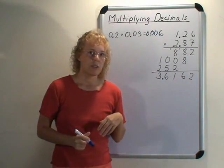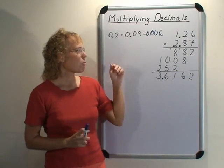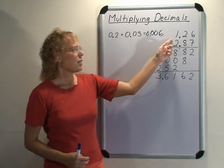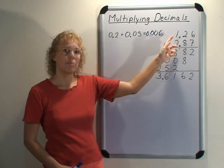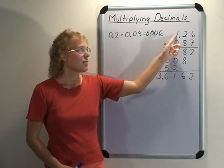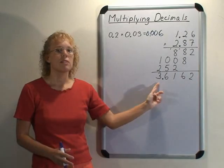And I might point out that this answer 3.6 something makes sense because if we estimate, this is about 1 and the other factor is close to 3. So this is like multiplying something close to 1 times something close to 3, and the answer is close to 3.